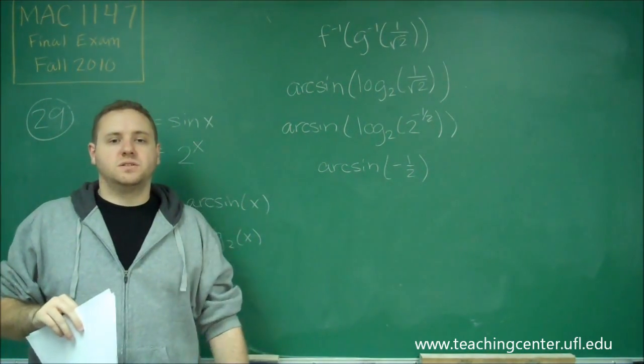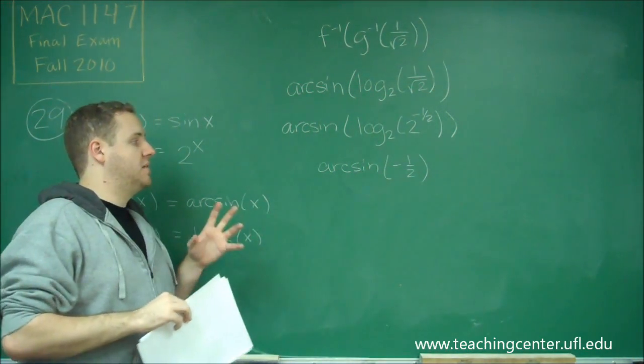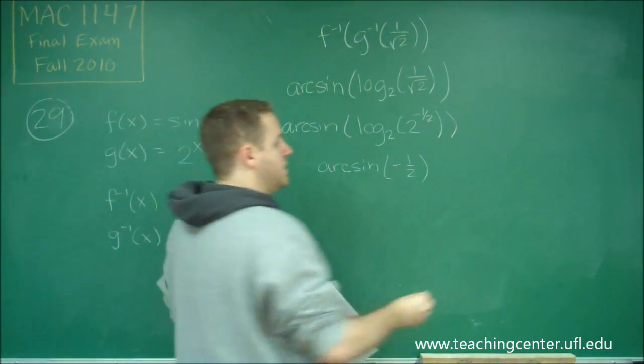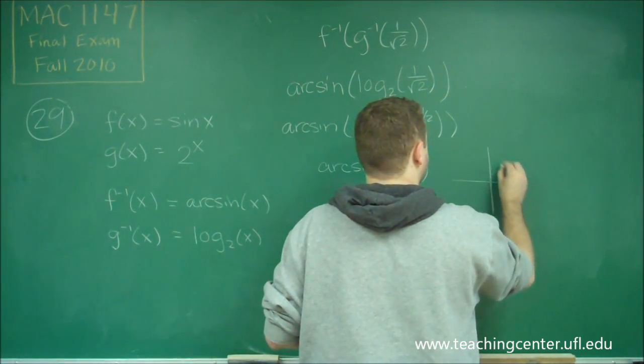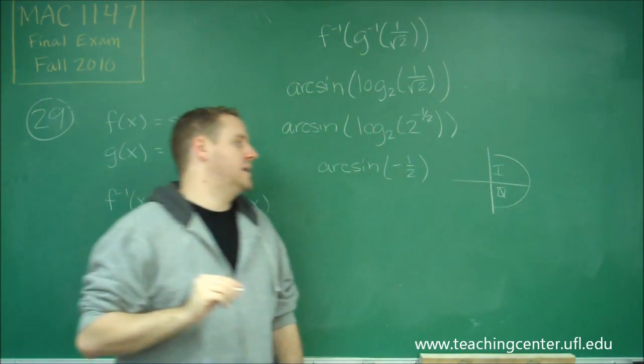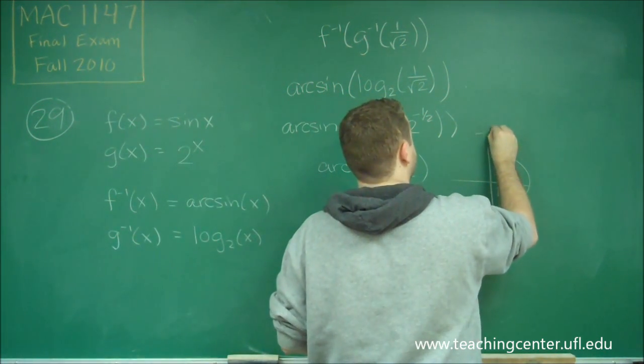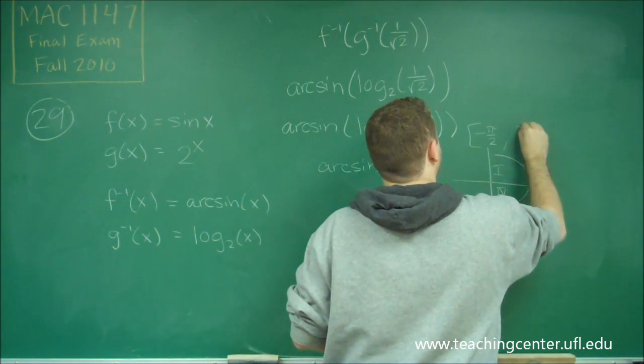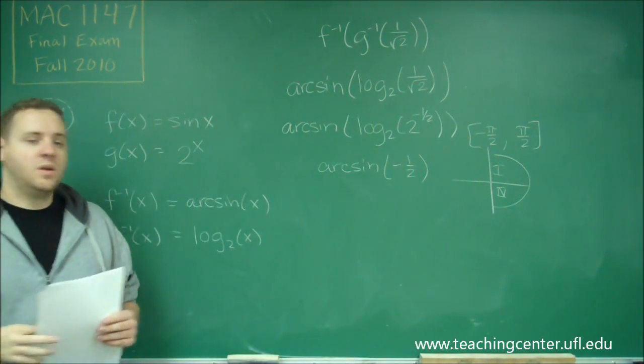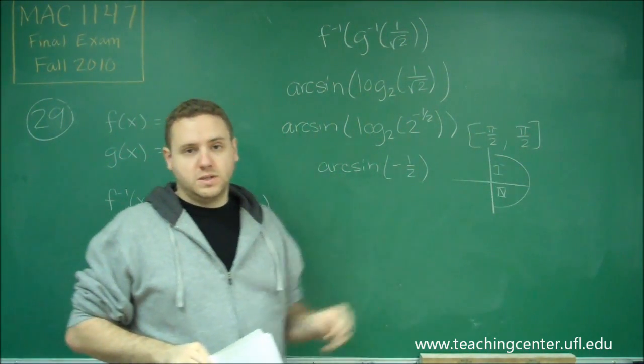And this is going back to our unit circle. So we're saying what angle gives us, when we do sine of that, gives us negative 1 half. So the one thing we need to be careful about here is remember that arc sine can only give us an answer that's in quadrants 1 or 4, so from negative pi over 2 to pi over 2. So we know that it's negative, so it has to be in quadrant 4 because sine is positive in quadrant 1.